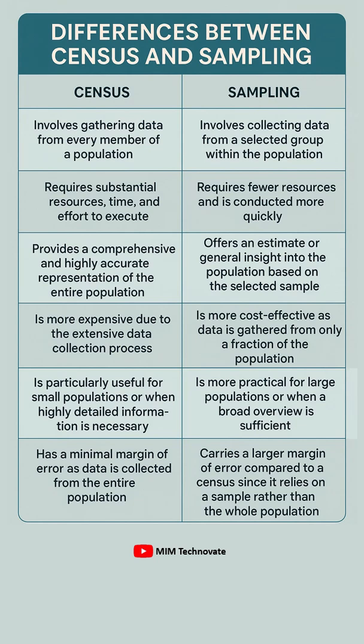Census provides a comprehensive and highly accurate representation of the entire population, while sampling offers an estimate or general insight into the population based on the selected sample.